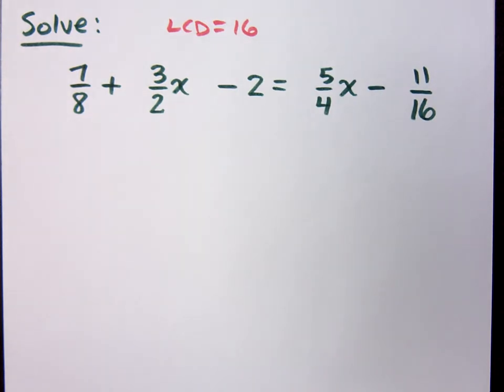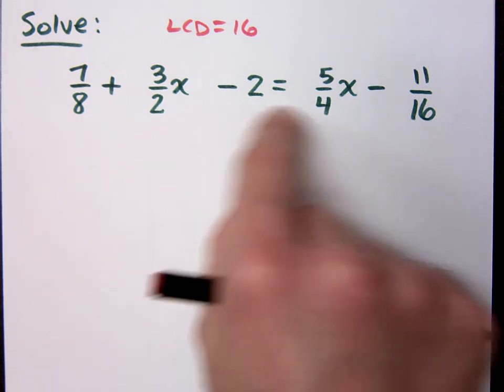How many terms get multiplied times 16? How many is that? Include yourself, five. There are five terms here, right? Uno, dos, tres, cuatro, cinco.